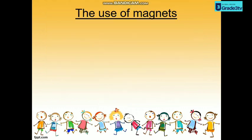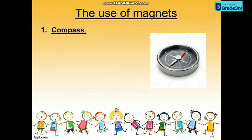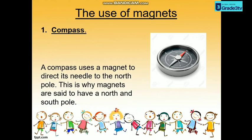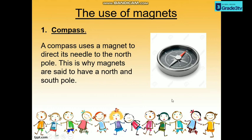The use of magnets number one is the compass. Do you know a compass? A compass uses a magnet to direct its needle to the north pole. This is the needle of the compass. This is why magnets are said to have a north and south pole.